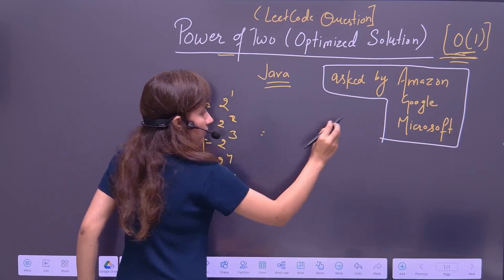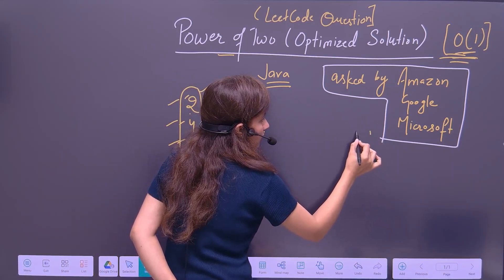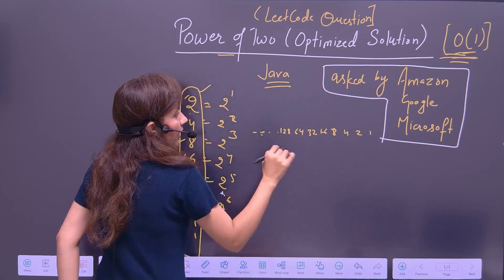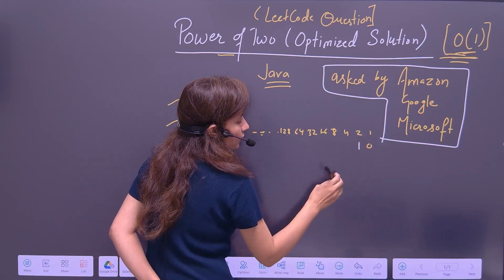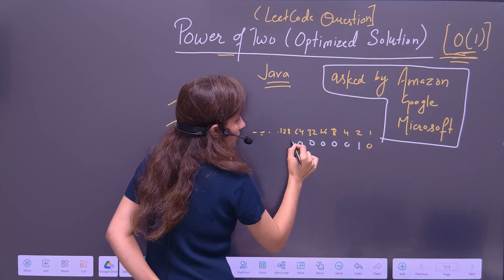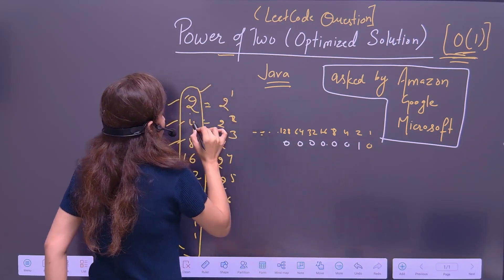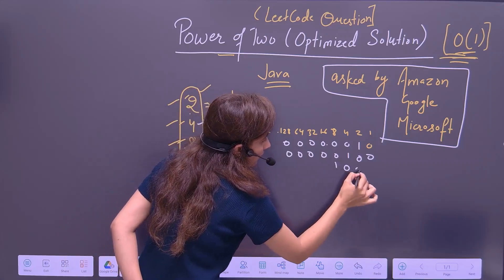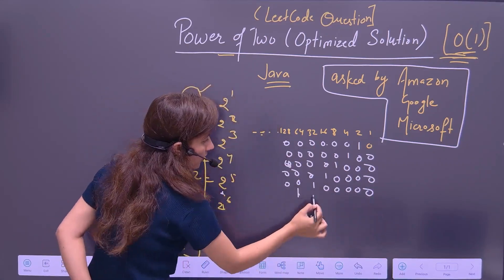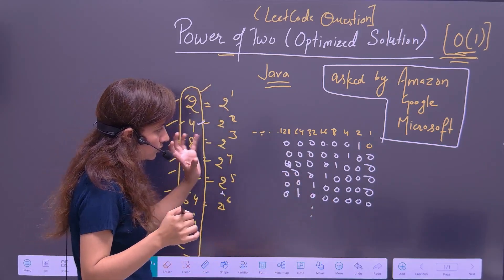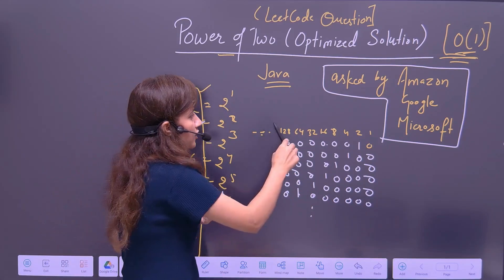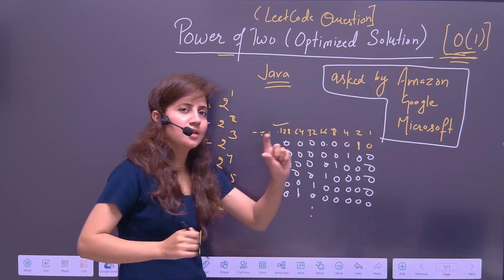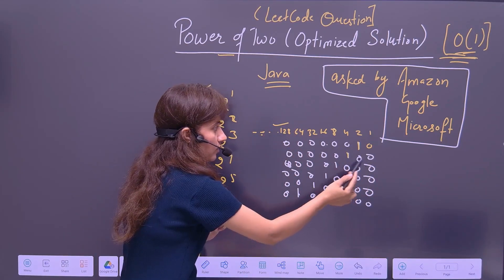Let's convert to binary. For 2, write the bit positions 1, 2, 4, 8, 16, 32, 64, 128 — writing in 8 bits. For 2, place 1 at the corresponding position and 0 everywhere else. For 4, place 1 here, every other bit is 0. For 8, place 1 here, every other bit is 0. So if a number is power of two, in its binary representation you will get only one bit set to 1, all other bits are 0.